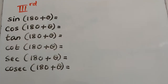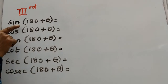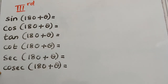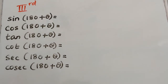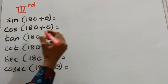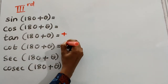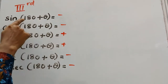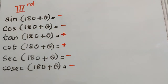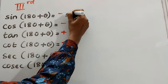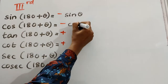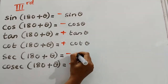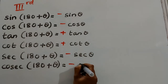Moving to the third quadrant. The third quadrant angle is 180° + θ. We need to find all trigonometric ratios. In the third quadrant, tan and cot are positive, so tan and cot answers are positive. Remaining all are negative. 180 is an even multiple of 90, so don't change the trigonometric ratio. The answers are: sine itself, cos itself, tan itself, cot itself, sec itself, and cosec itself.